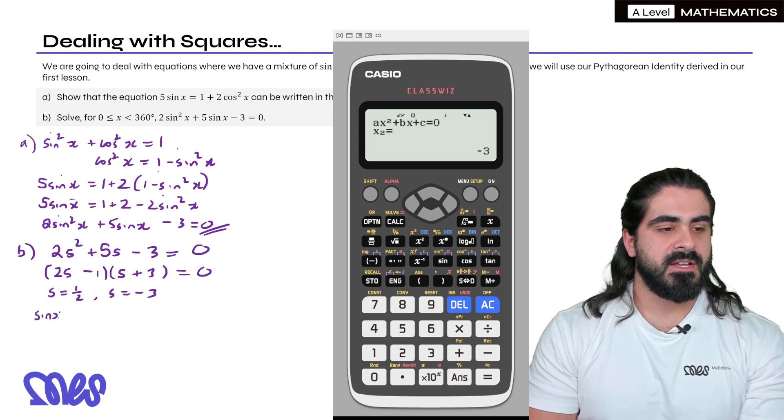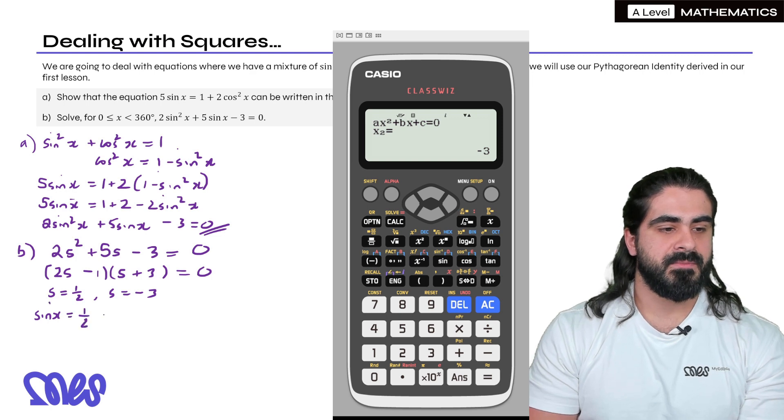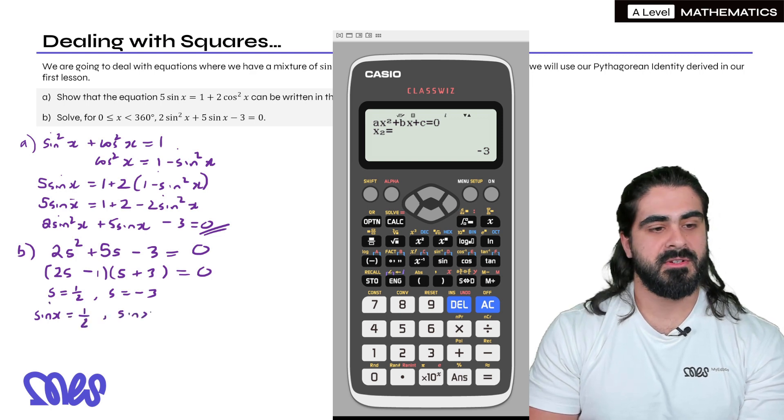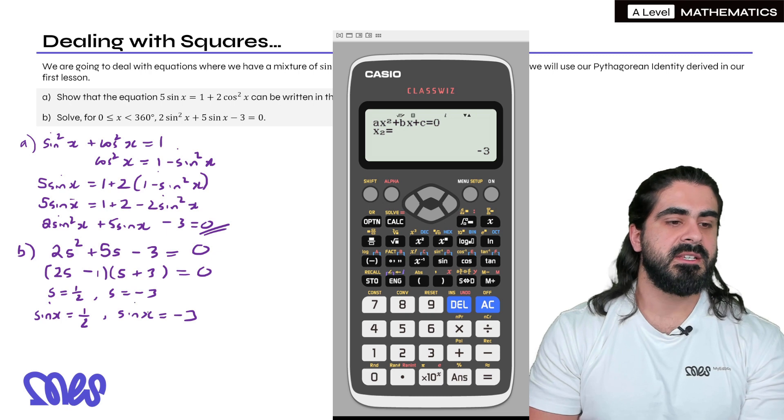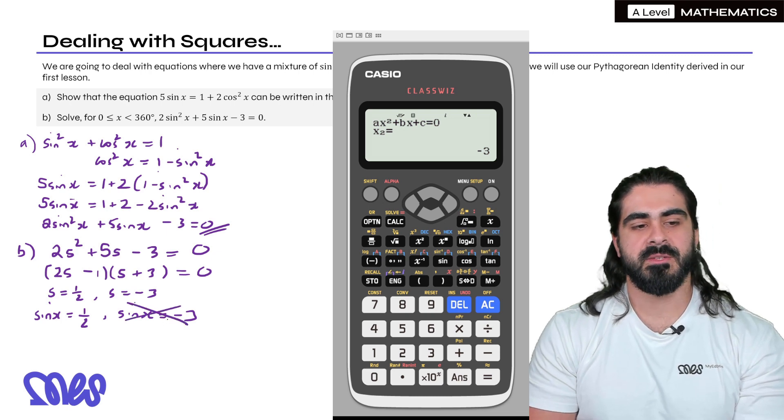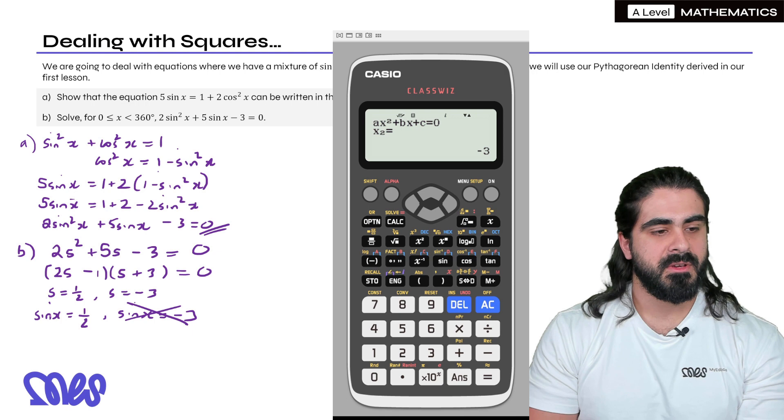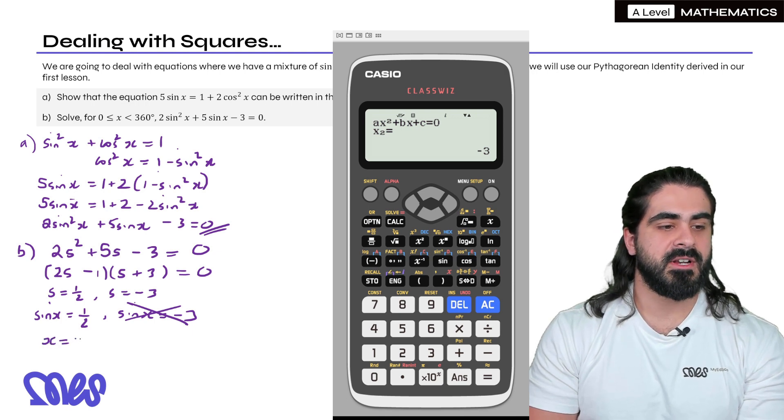Now we need to change back to sine. Remember we're solving for x. Sine x is a half and sine x is minus 3. Then immediately you should notice that sine x can't equal minus 3. Sine is between 1 and minus 1. Then we're going to do inverse sine of a half. Without needing a calculator here, that'll be 30 degrees. That's your PV.